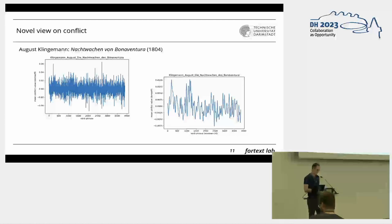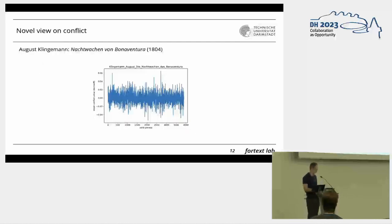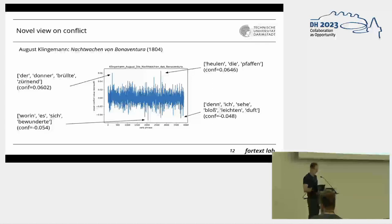I don't want to go too much into interpreting this progression, but rather show you example verb phrases so you can get an idea of what can be detected with this method. Looking at the peaks in this novel, the verb phrases the Dornsai approach checks as most conflictual are: 'the thunder roared angrily' and 'the priests are howling.' For the lower part of the spectrum, the least conflictual and most harmonious examples are: 'wherein it itself admired' and 'because I only see a light sound.'